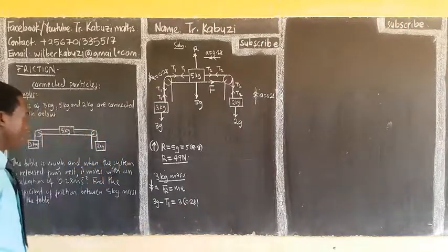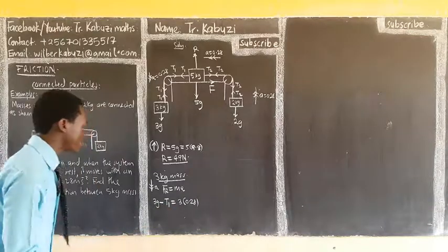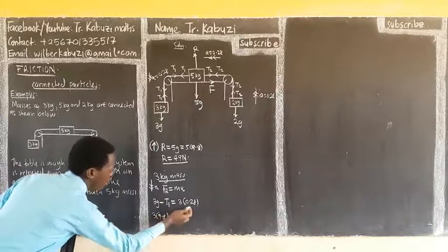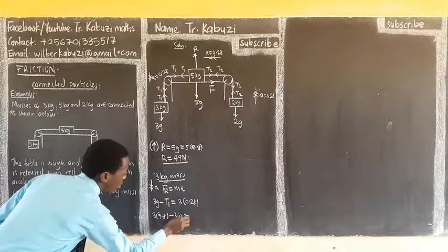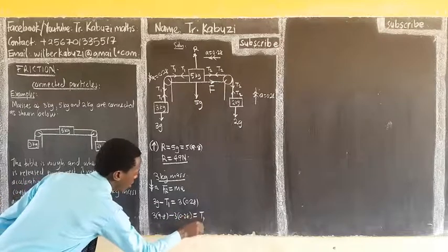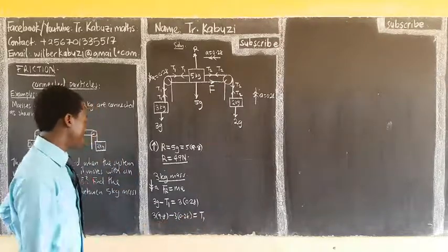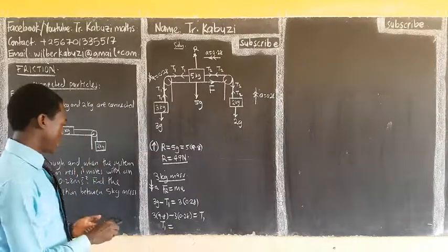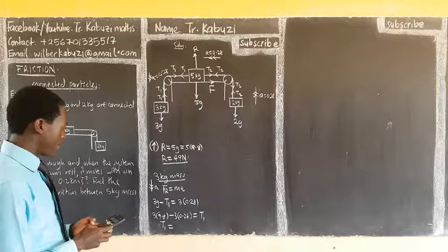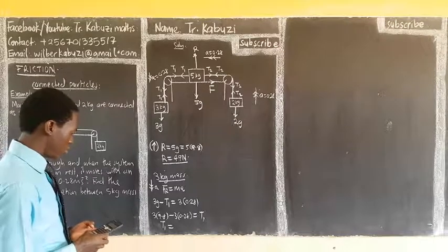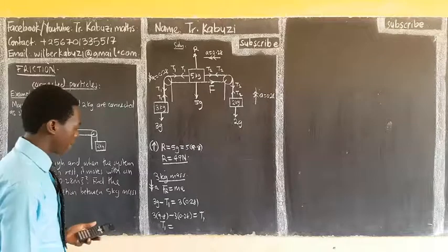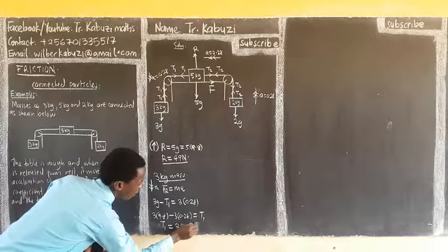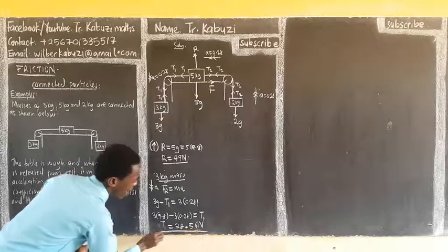And from there, you can see that I can get my T1. If I take this aside, this would be 3 into 9.8. Then, when I bring this aside, minus 3 times 0.28 equaling to T1. Now, apply the calculator. Your T1 from here will be 9.8 minus 0.28. Then, that is the thing. This is 28.56 Newtons. So, I have my T1.